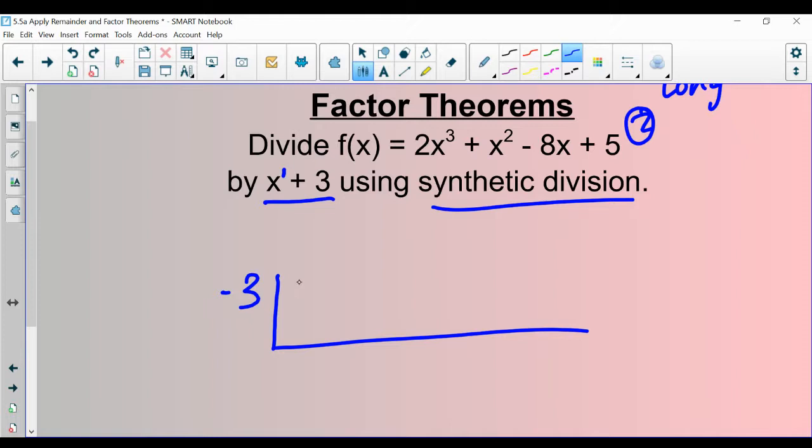You're going to imagine that there are two rows in this synthetic division symbol, one row here and one row here. You're going to put all of the coefficients for the polynomial that is being divided in the first row. If there were a missing term, you would have to put zero there. That's really crucial. But there isn't in this problem.